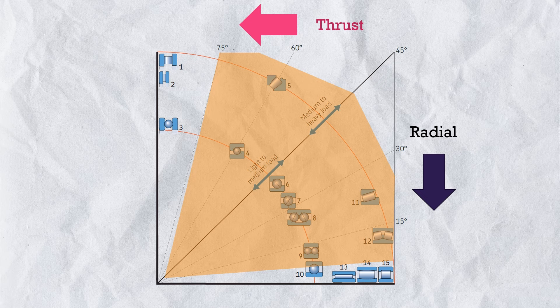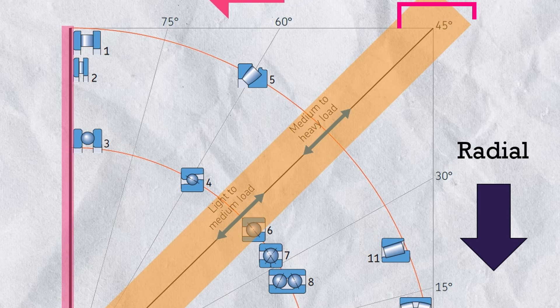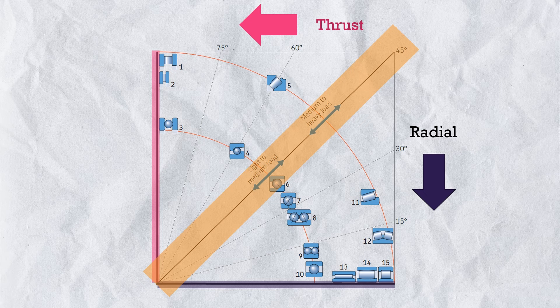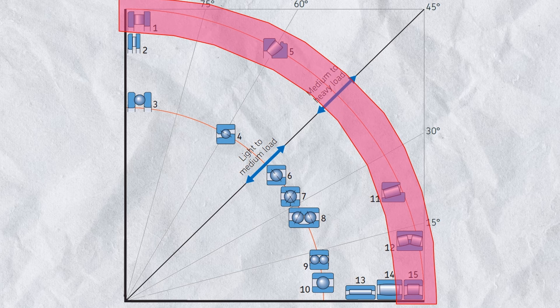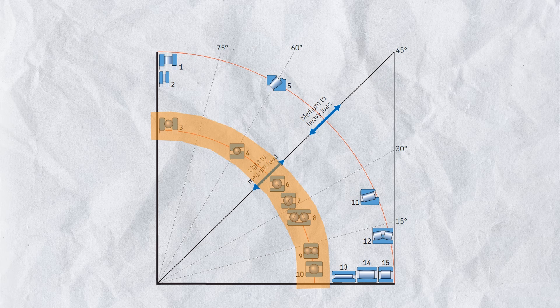The bearings in between can take load at an angle. For example, if the load is at 45 degrees, angular contact bearing is the more suitable. The bearings positioned at the outer line are more suitable for heavy load — and they are all roller bearings: cylindrical roller bearing, spherical roller bearing, taper roller bearing, and cylindrical thrust bearing. The bearings positioned at the inner ring are the ball bearings, having less load carrying capacity as compared to roller bearings.